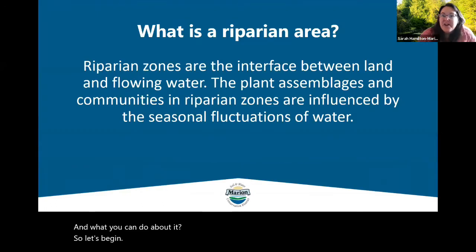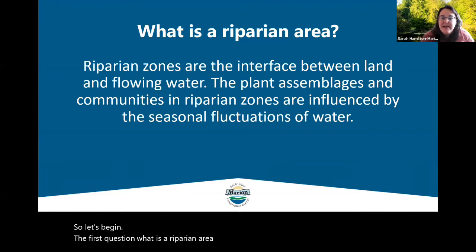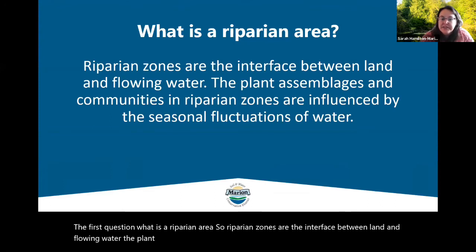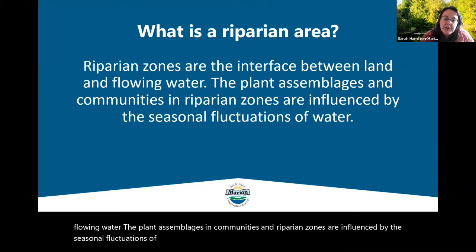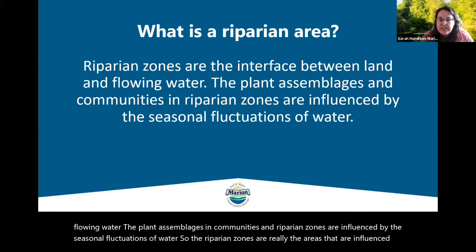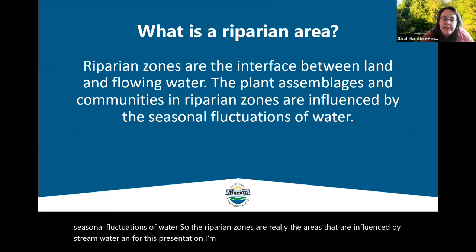The first question: what is a riparian area? Riparian zones are the interface between land and flowing water. The plant assemblages and communities in riparian zones are influenced by the seasonal fluctuations of water. So riparian zones are really the areas that are influenced by stream water. For this presentation, I'm including the aquatic areas in the stream as well as the land adjacent to the streams.